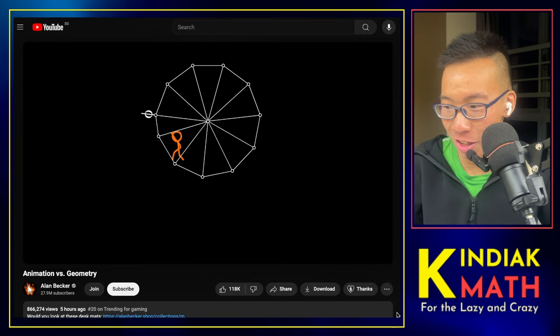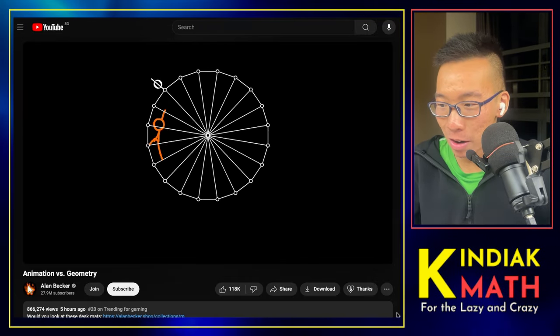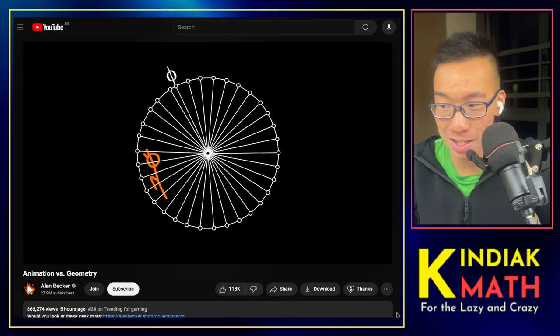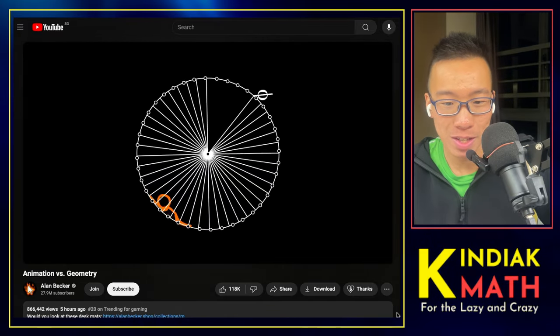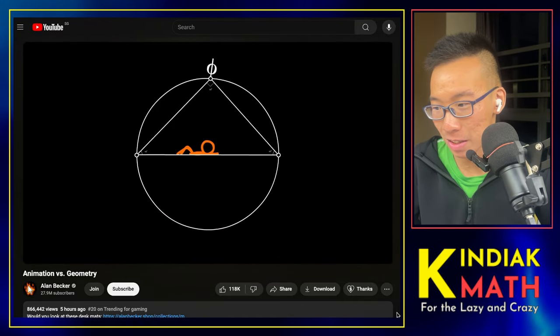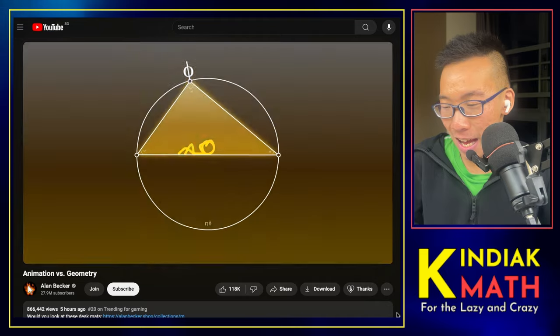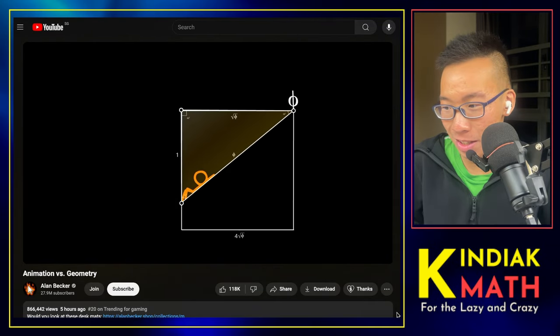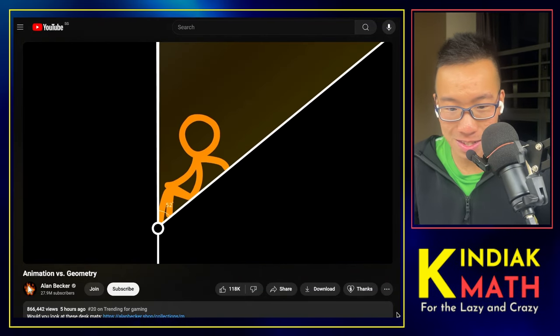Octagon, nonagon. And as you get more and more sides, it starts to approach a circle, at least geometrically. This is the angles in a semicircle. There's the right angles, it's 90 degrees.